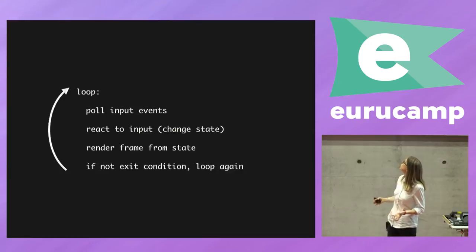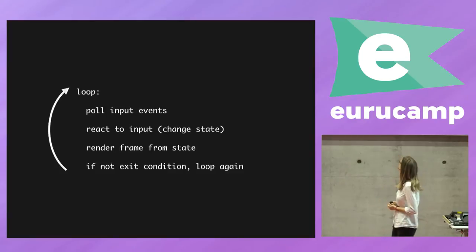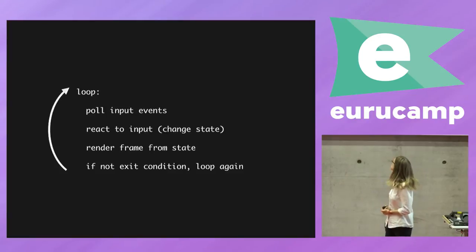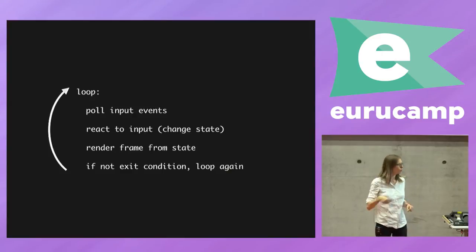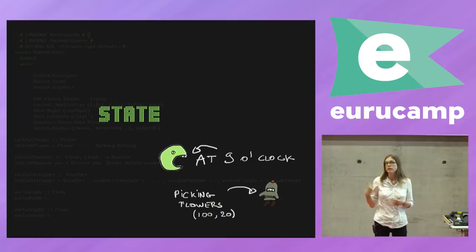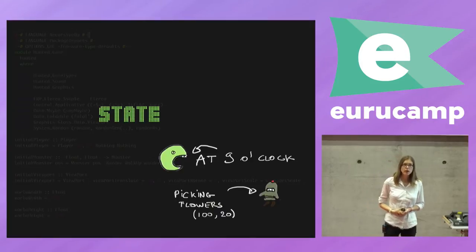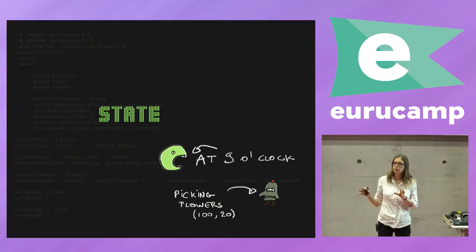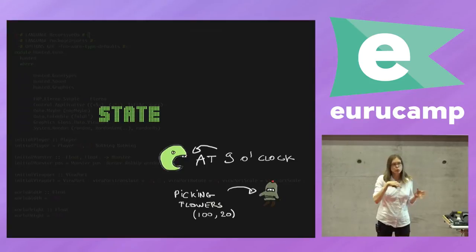Our loop goes like this for the game: poll input events, react to input and change the state, then render a frame from the state. And then if you don't exit, you start again — you loop. Then obviously in that loop you have state. You need to keep track of where you are in your game to get a coherent flow of events.